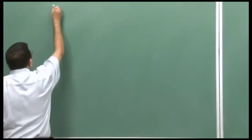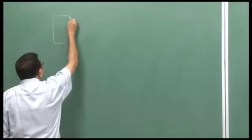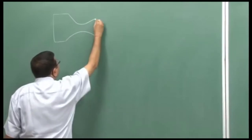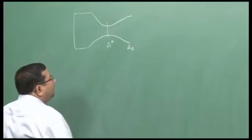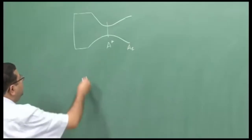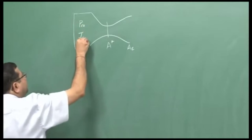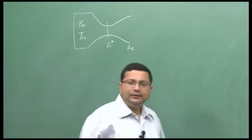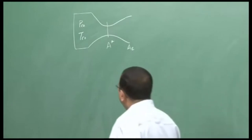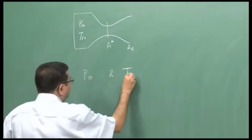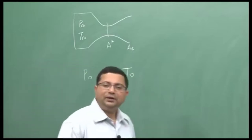Remember that a rocket nozzle is always a converging-diverging nozzle. The throat area is A*, the exit area is A_e, and the combustion chamber pressure and temperature are P_c0 and T_c0. The general expression for the mass flow rate for compressible flows has the terms P_naught and T_naught — the stagnation pressure and stagnation temperature.